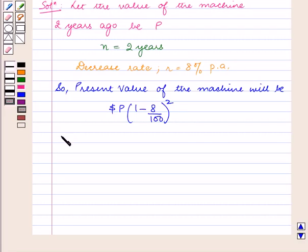Given that, the present value of the machine is equal to 529 dollars.